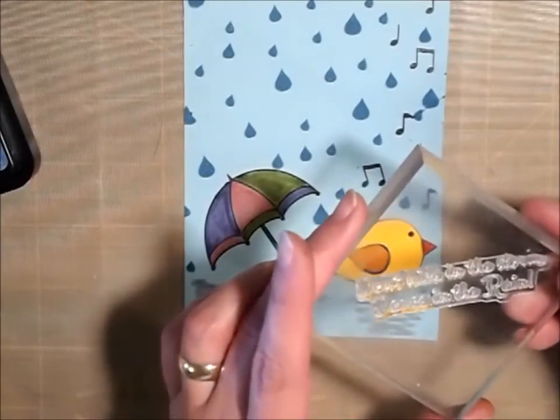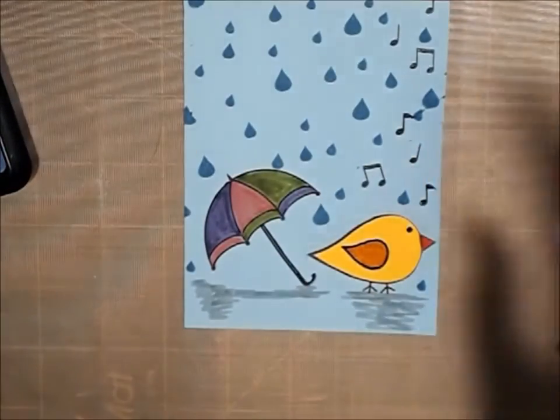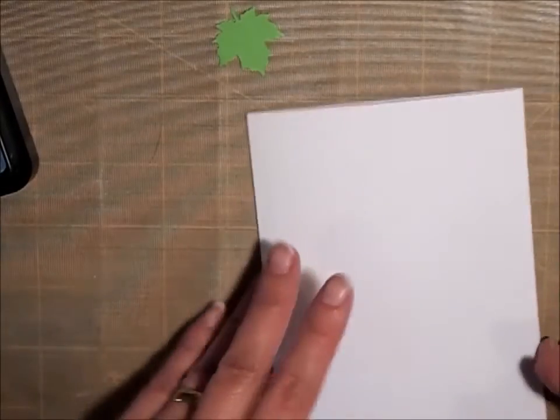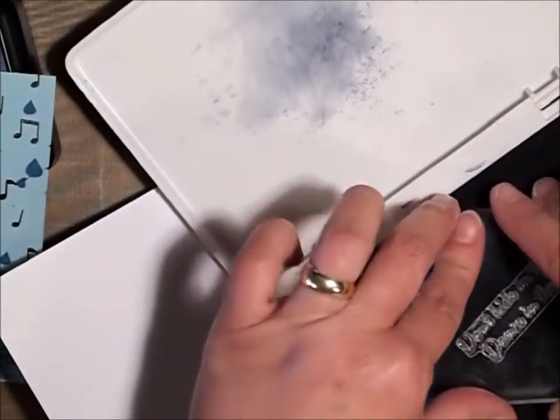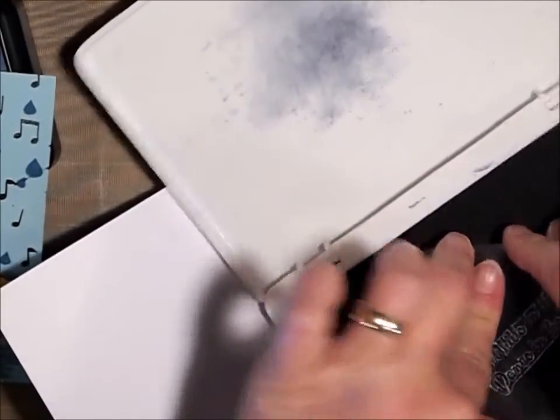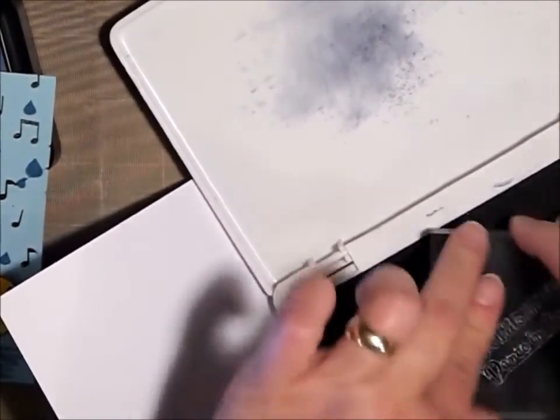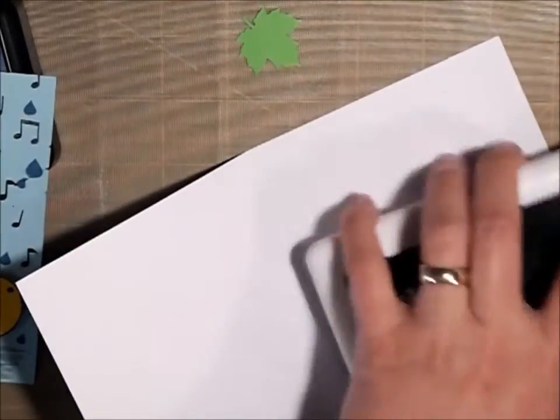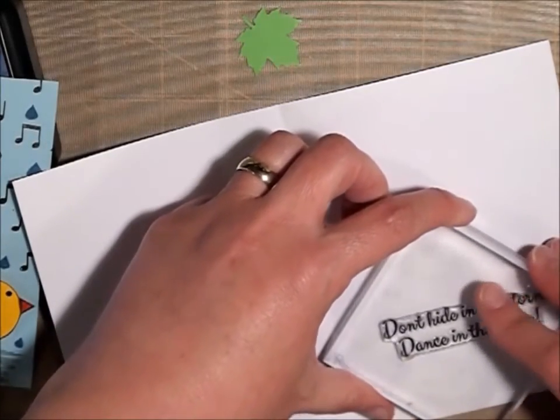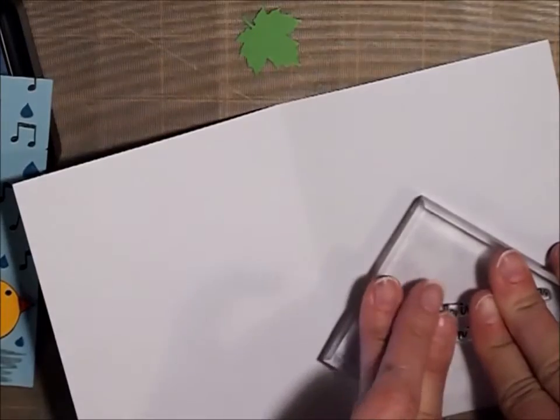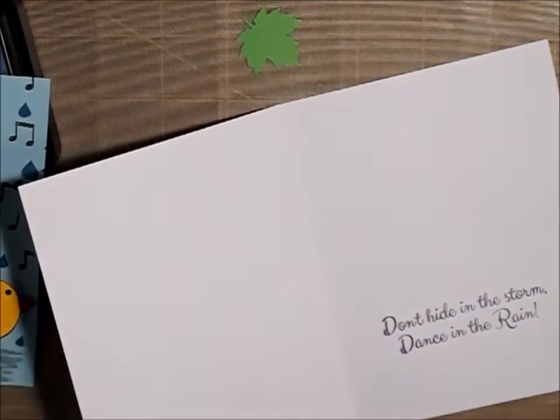'Don't hide in the storm, dance in the rain.' So I'm going to use that and I'm going to put that on the inside of my card. I'm just going to kind of put it towards the bottom, probably about a third of the way up. I just think that'd be really cute. I'm just using my archival jet black ink. And that looks pretty good.